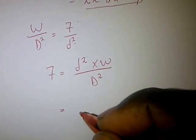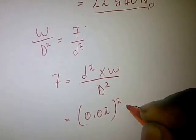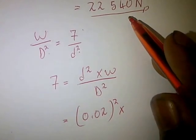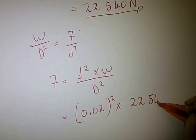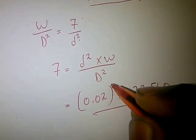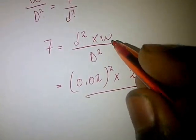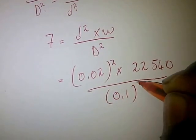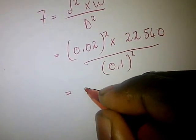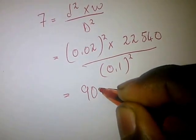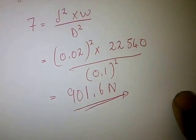The plunger diameter is 0.02 meters squared, multiplied by the force on the ram side which is 22,540 N, divided by the ram diameter 0.1 meters squared. Our answer is 901.6 Newtons — this is the force exerted on the plunger.